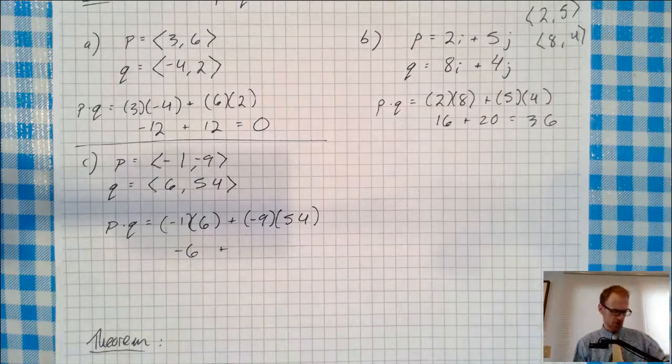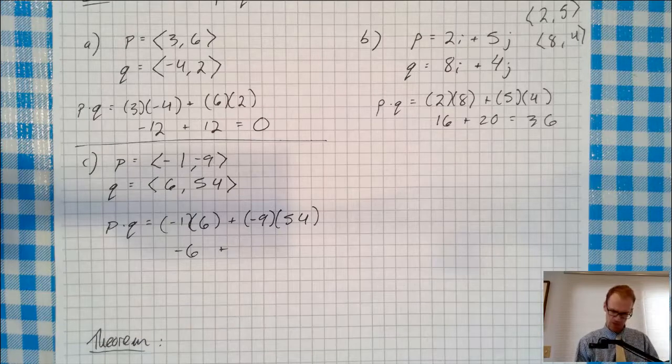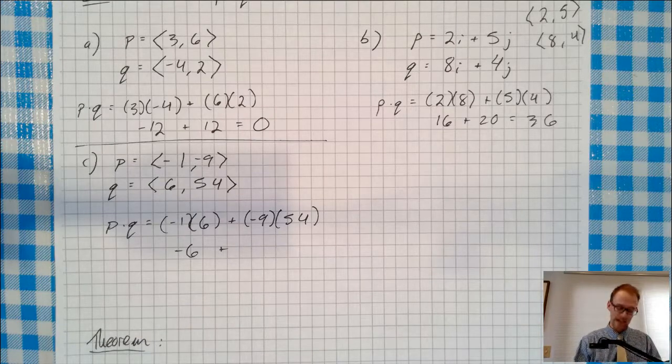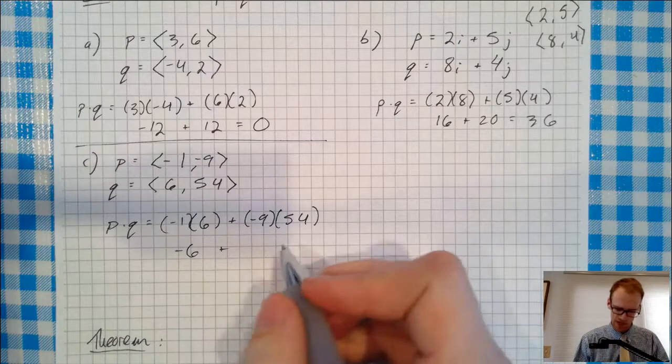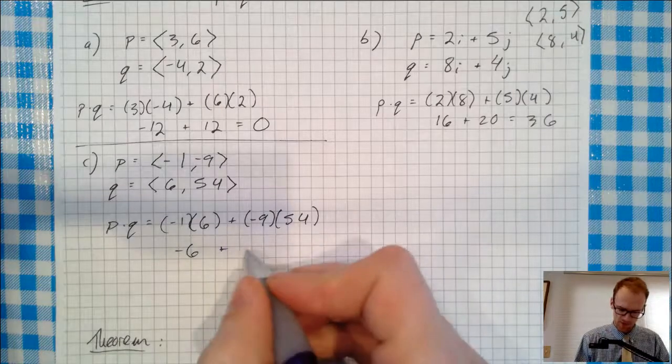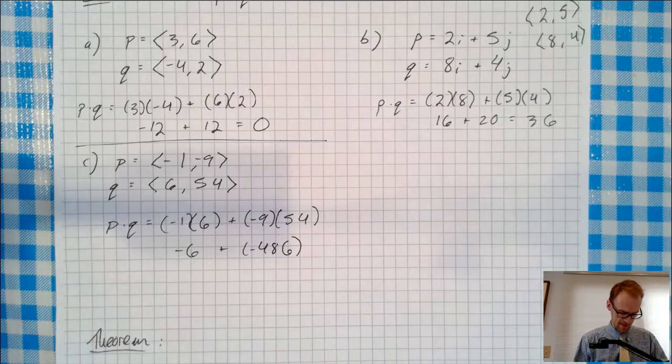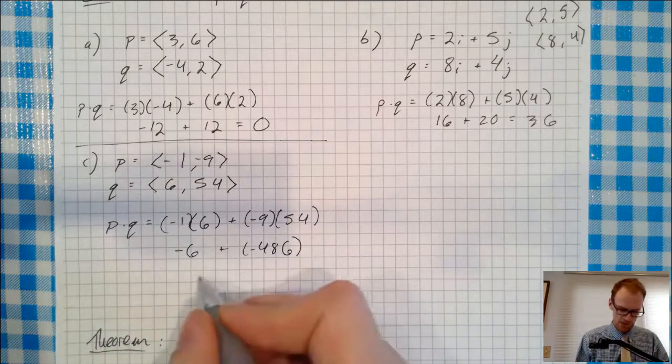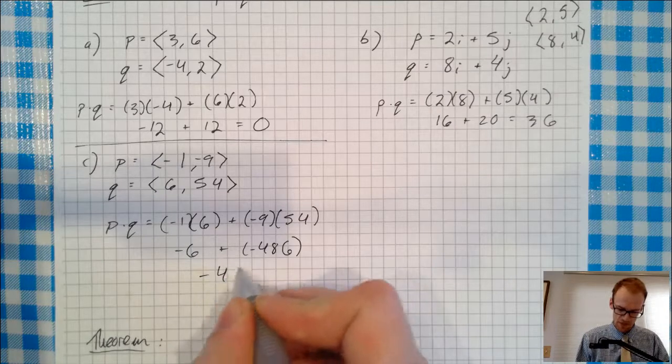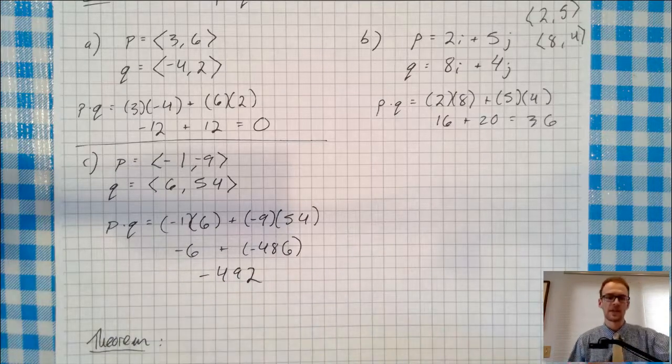496. Let's double check that. 9 times 54, 486. Oops, forgot to carry the one, I guess, literally. So negative 6 plus negative 486. And when we add those together, negative 6 plus negative 486, we get negative 492 is the dot product of P and Q in that case.